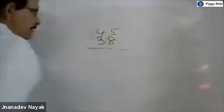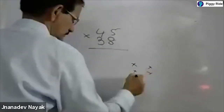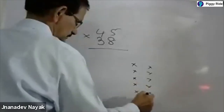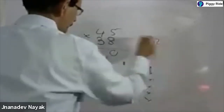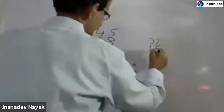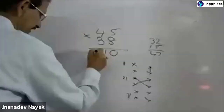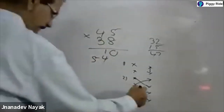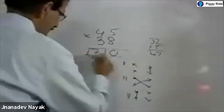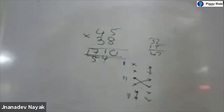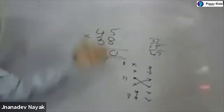One more criss-cross example: 45 into 38. Three steps. First, multiply the last two numbers: 5 into 8 equals 40 — write 0, carry 4. For the middle step, cross multiply and add: 4 eights are 32 plus 5 threes are 15 equals 47, plus carry 4 equals 51 — write 1, carry 5. Third step, multiply the first two numbers: 4 threes are 12, plus carry 5 equals 17. So the answer is 1710.